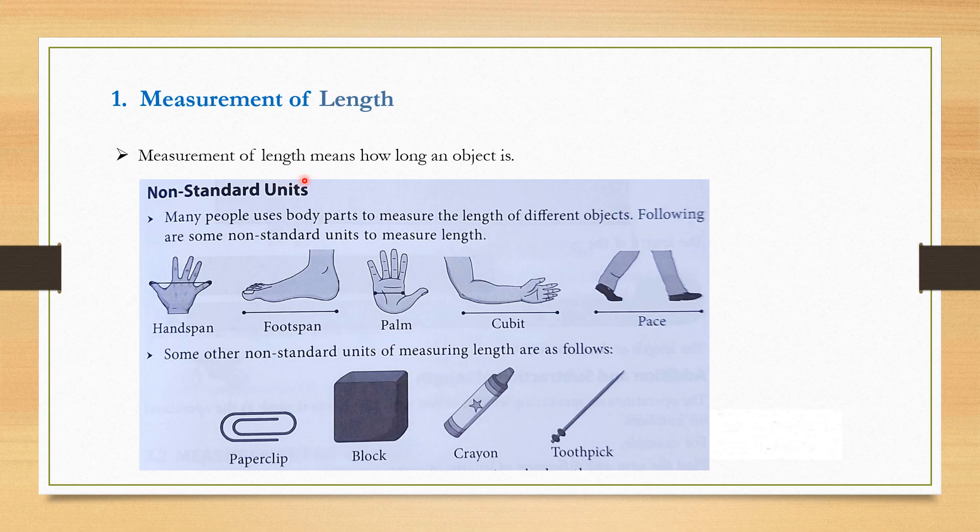Measurement of length means how long an object is. We use two kinds of units: non-standard units and standard units. Many people use body parts to measure the length of different objects. Following are some non-standard units to measure length.